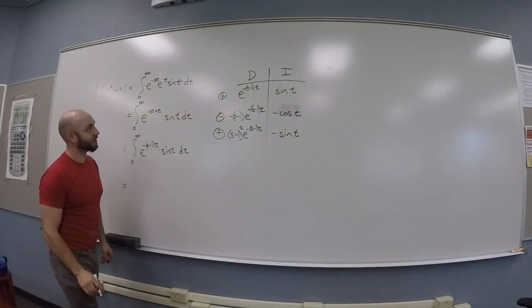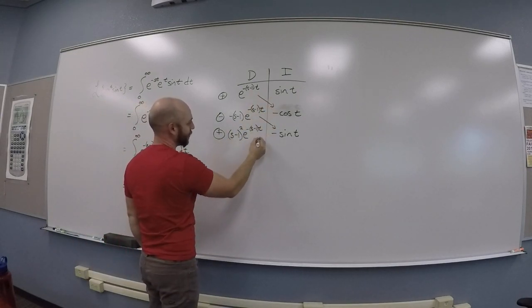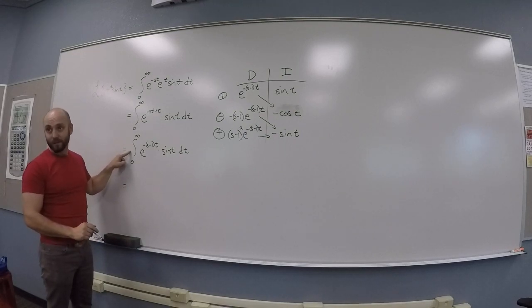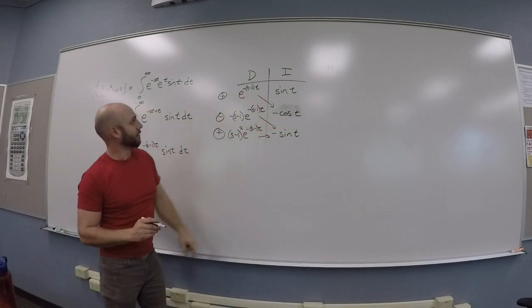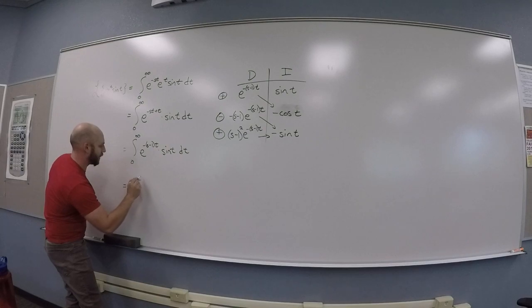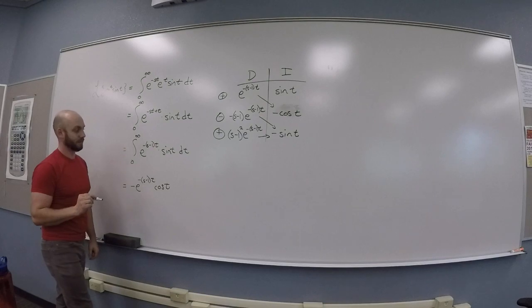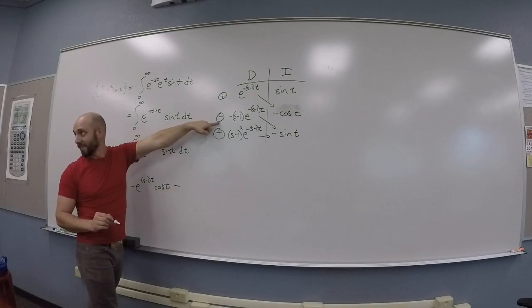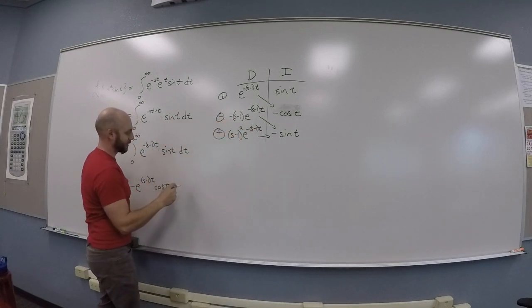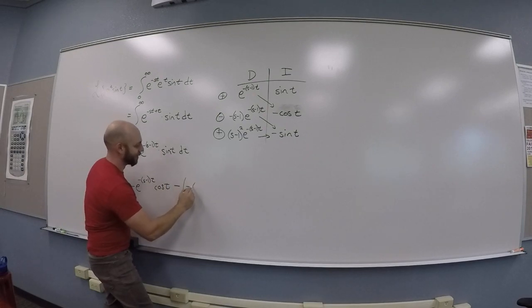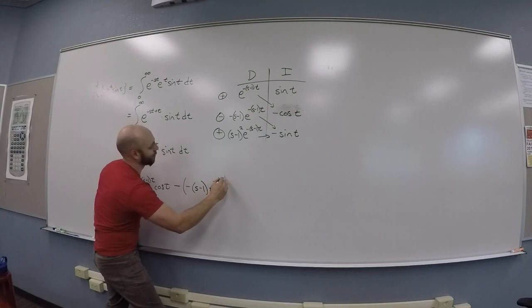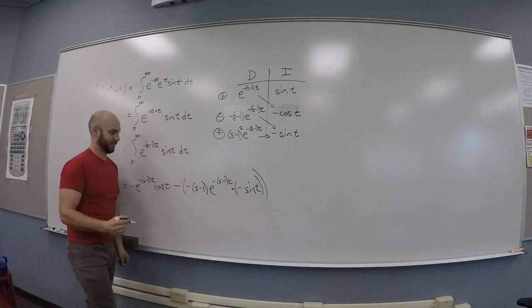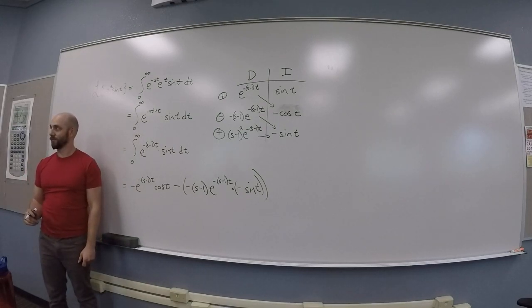And then you do this funky thing. So, correct me if I'm wrong, Chris. You draw an arrow this way, an arrow this way, and an arrow that way. Yeah. So, the integral that I started with, right, is the first arrow, so minus e to the minus s minus one t cosine t. So, that's minus s minus one e to the minus s minus one t times negative sine t. Cool? And then.